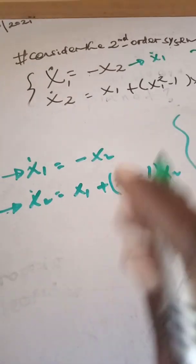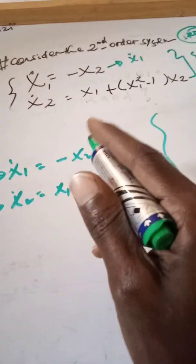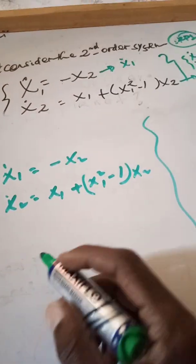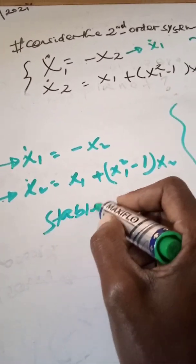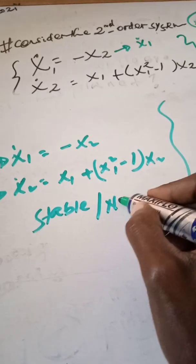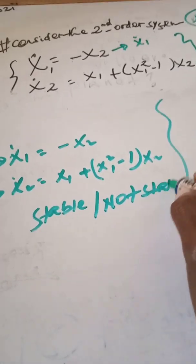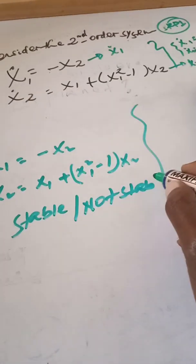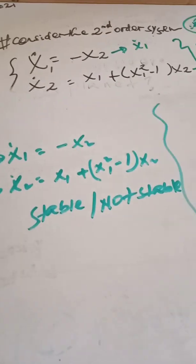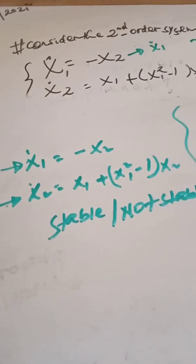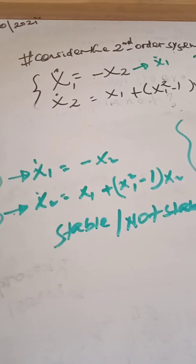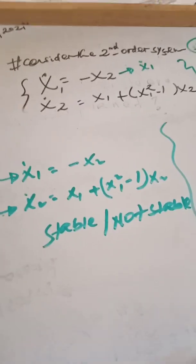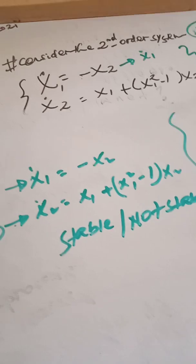The question here is: is this particular second order system stable or not stable? That is the question. To check the stability of the system at a particular point, we have a methodology.